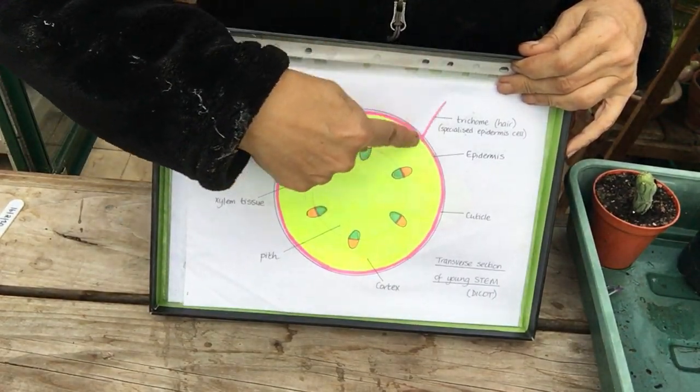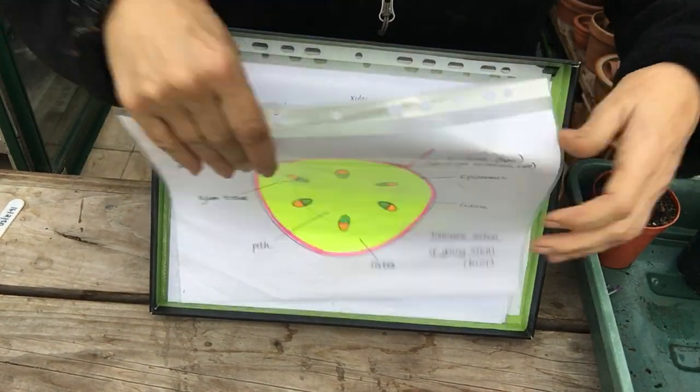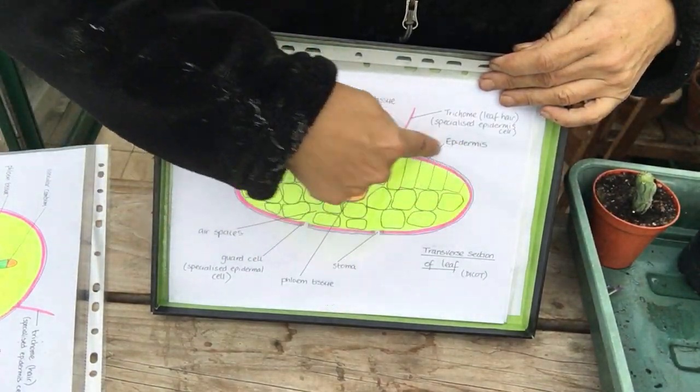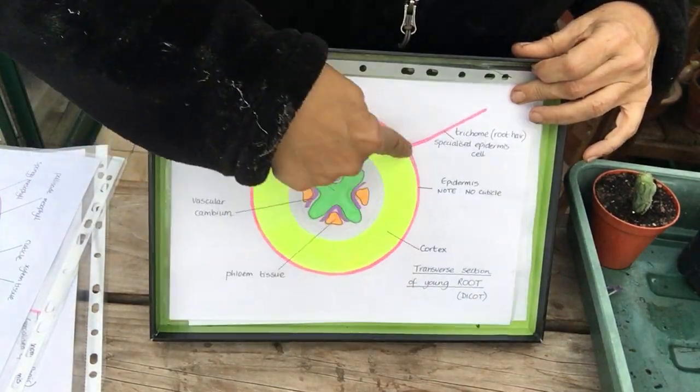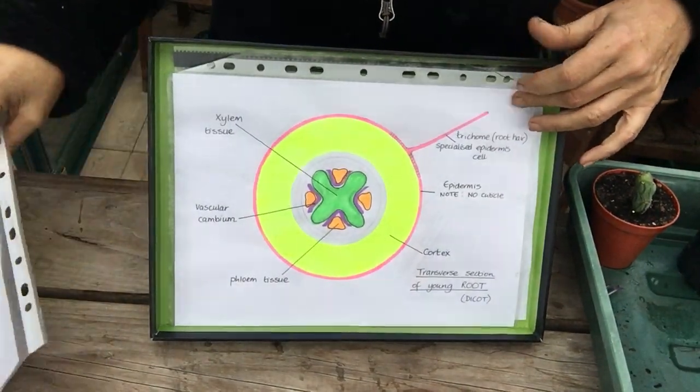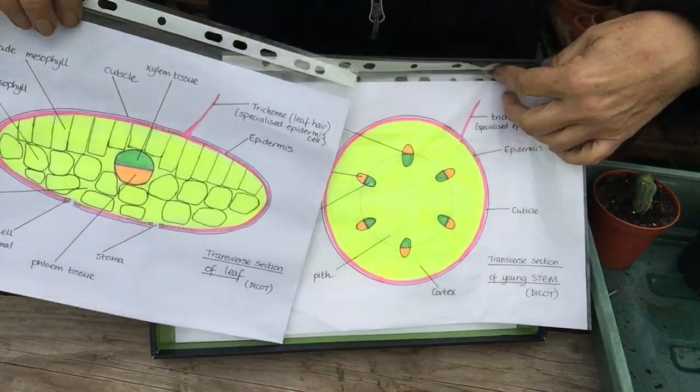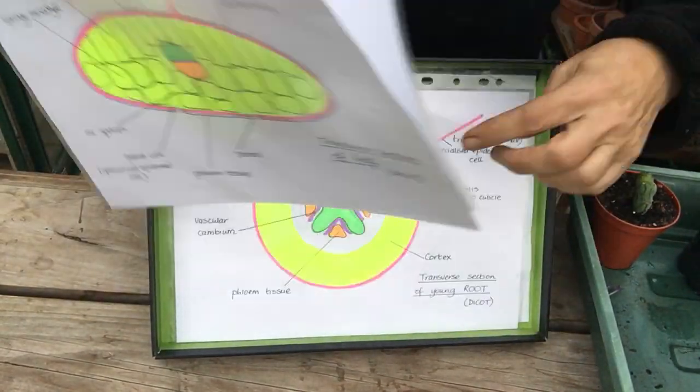You can see this pink outer layer in the stem, our pink outer layer in the leaf and our pink outer layer in the root. And now you can see on all three of these we've got this outgrowth called a trichome.